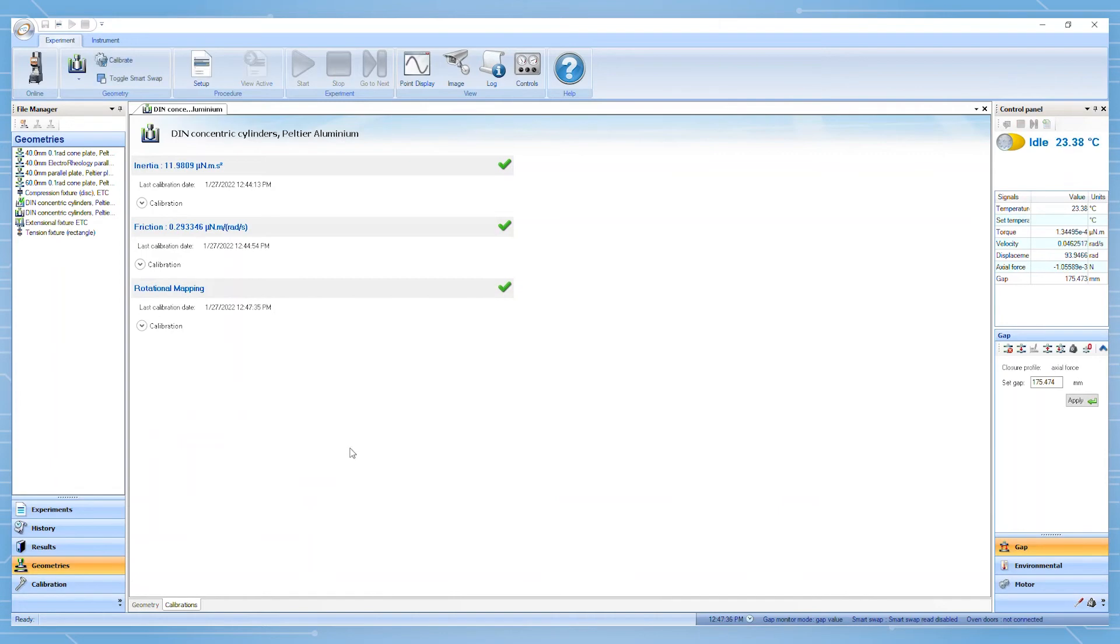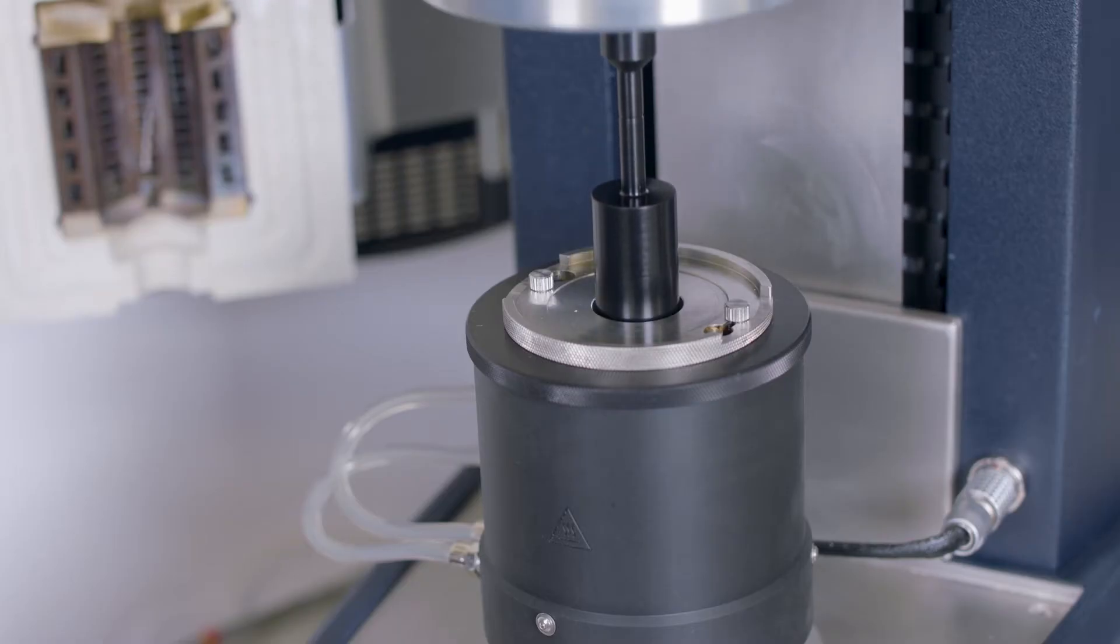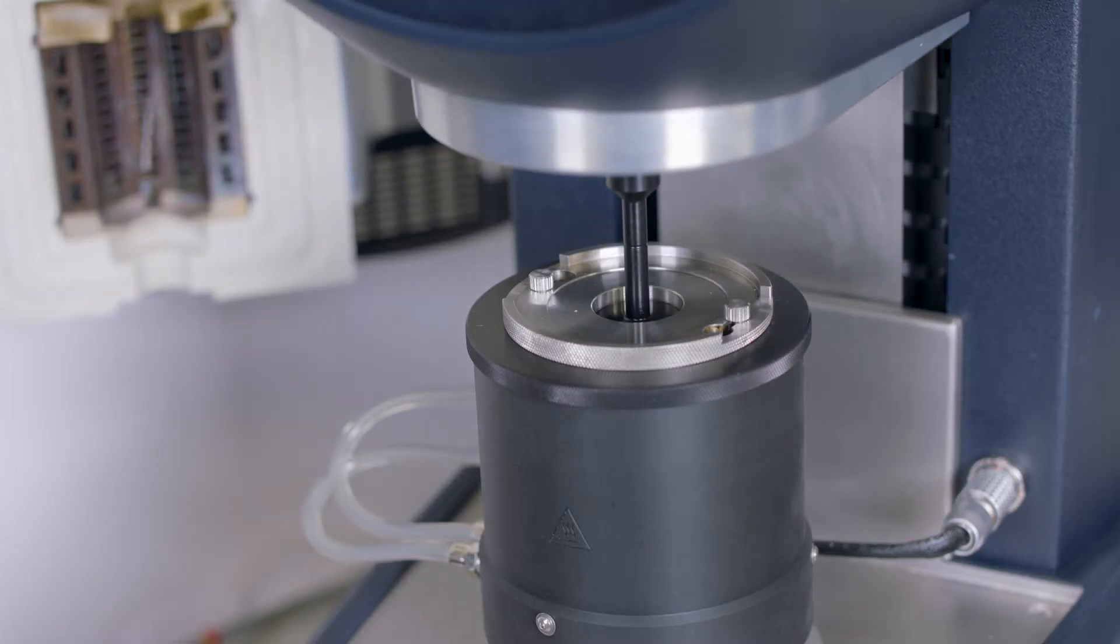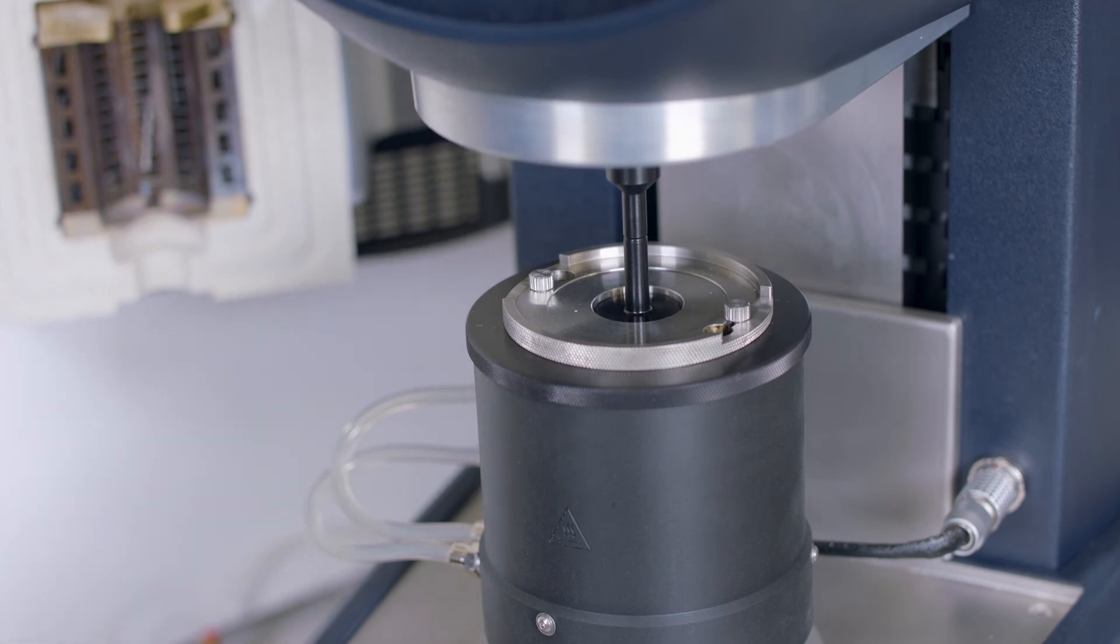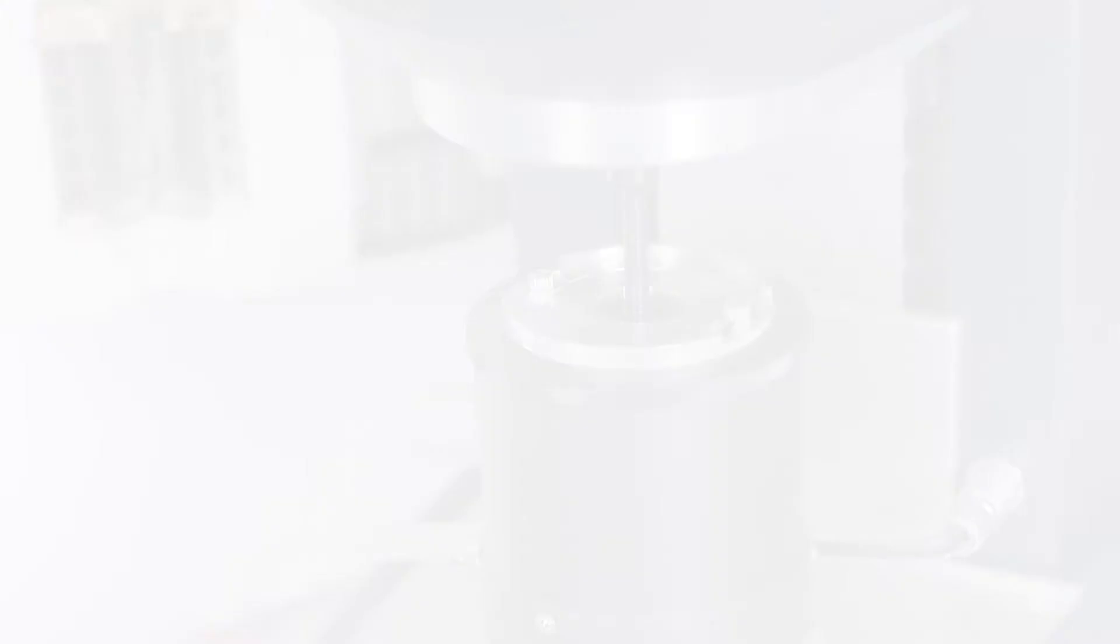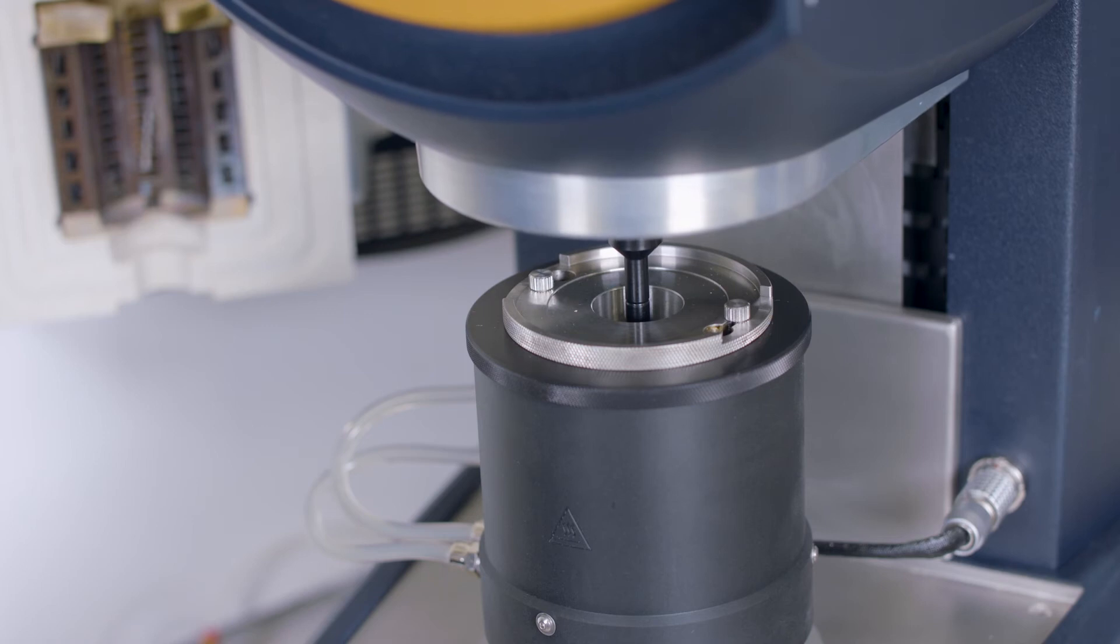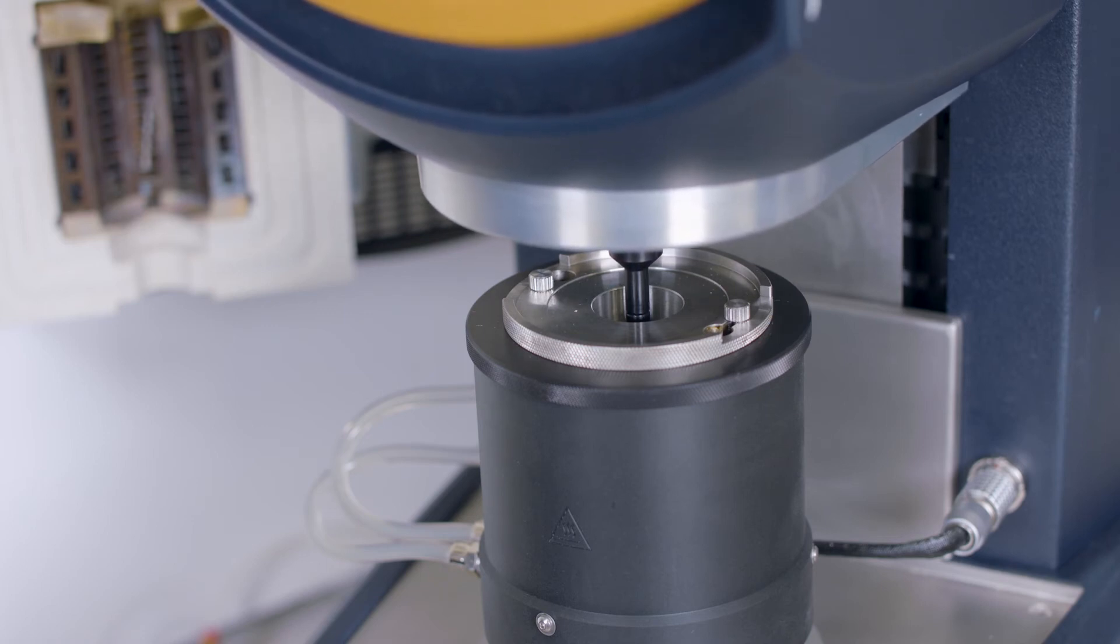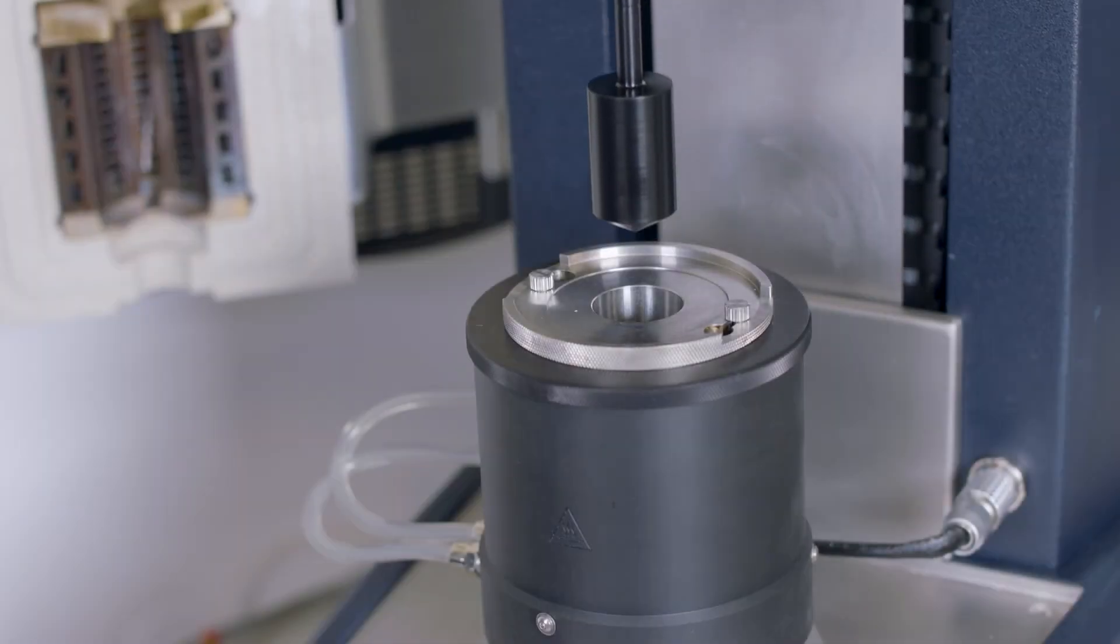After the calibrations are done, the next step is to lower the upper fixture closer to the cup by using the bottom arrow displacement key. After this, the zero gap button can be pressed and the instrument will proceed to zero the gap. After the gap is zeroed, the upper fixture can be raised back to the top.